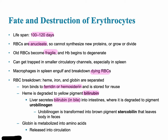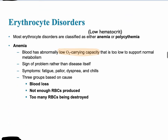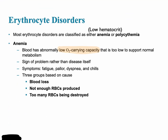Some erythrocyte disorders you should be familiar with are those that have to do with low hematocrit or high hematocrit. Low hematocrit is what we refer to as anemia, and there are a few different types. High hematocrit is the disorder called polycythemia.